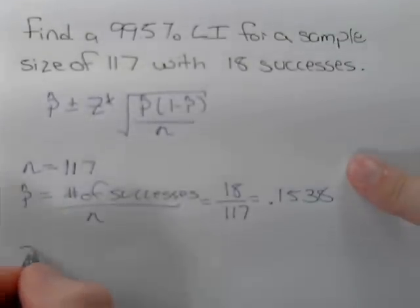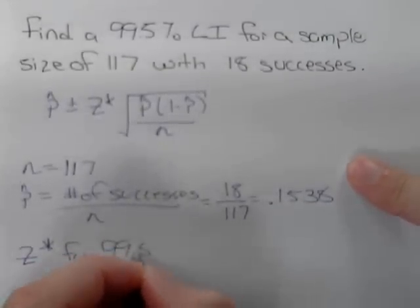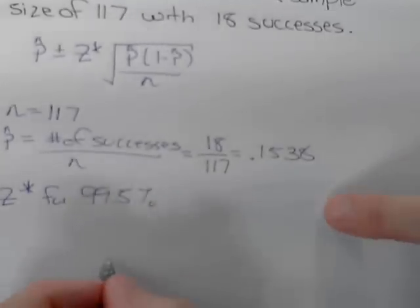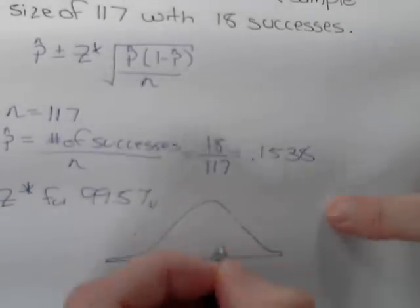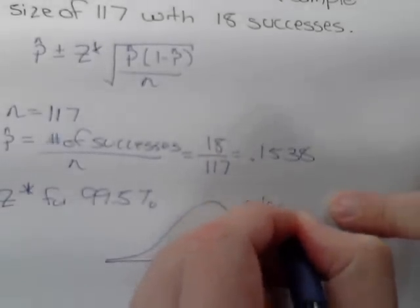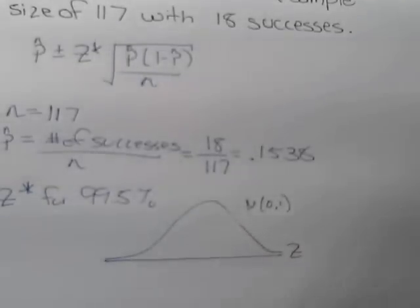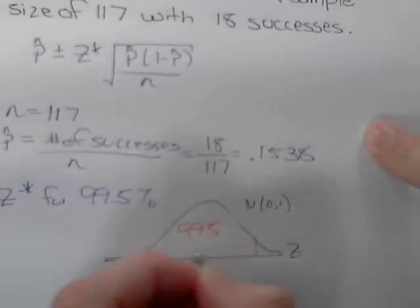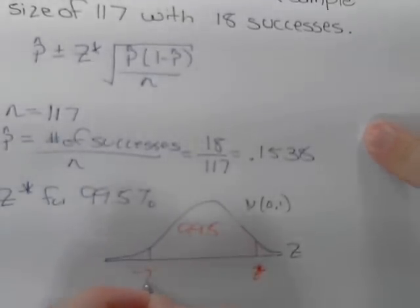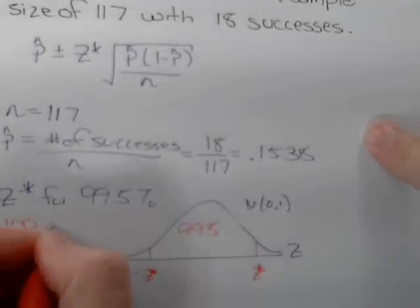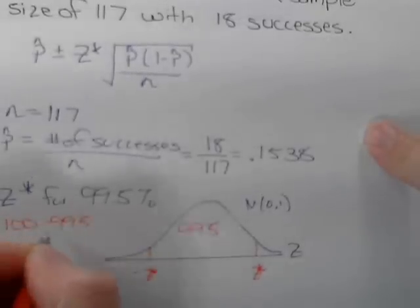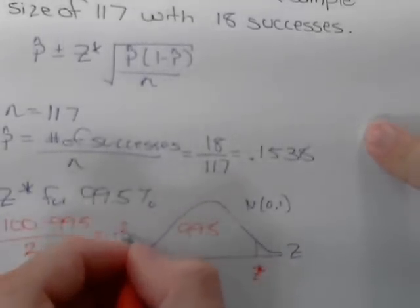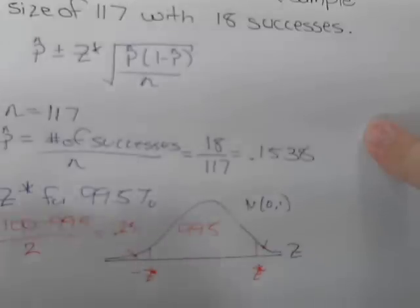We need to find z-star for a 99.5% confidence interval. If this is a standard normal with z values, we have 99.5% in the middle. This is our z-star and this is negative z-star. To find the proportion in each tail, 100 minus 99.5 divided by 2 equals a quarter of a percent in each tail.